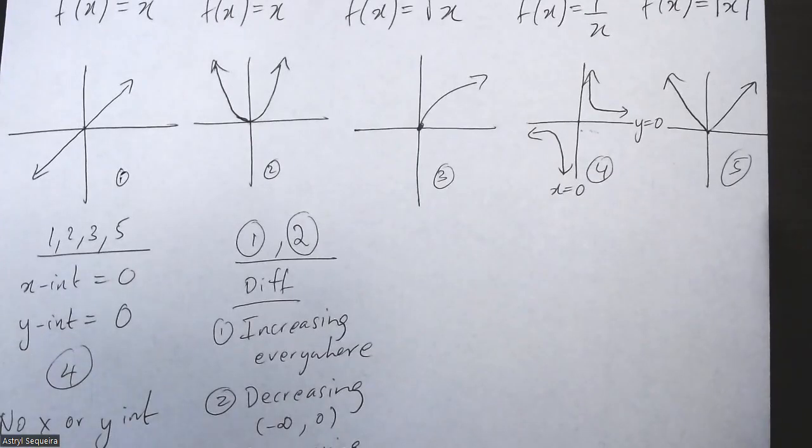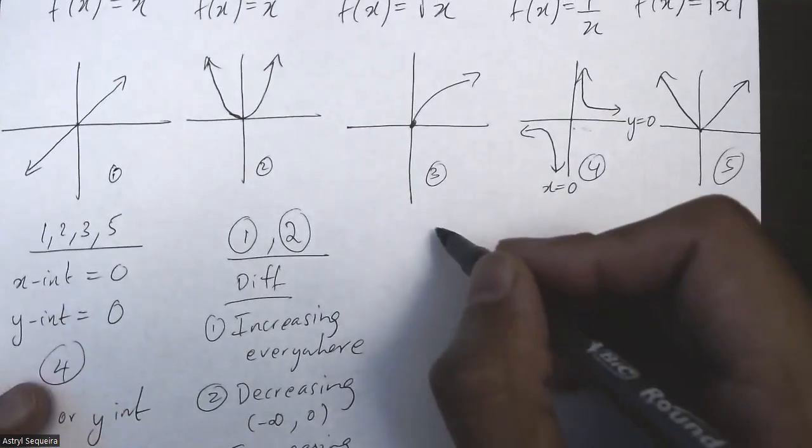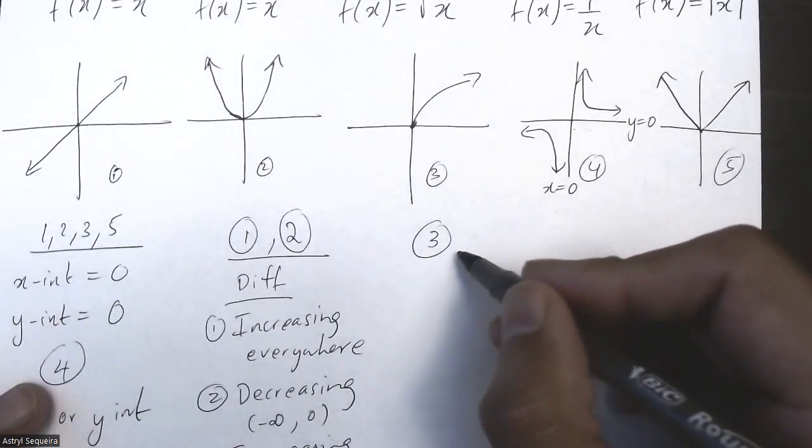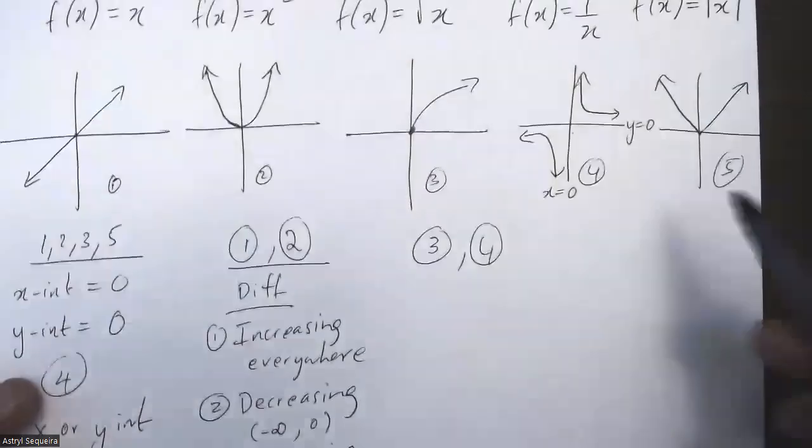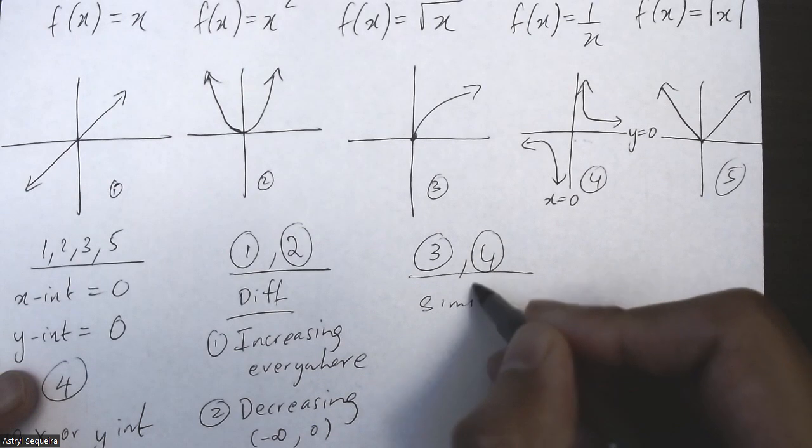It's pretty easy to find differences between all of these. Some of them may be slightly difficult to find the differences. Another similarity that I can mention, so let's say for example we're comparing three and four. Well, what's a similarity between three and four? It's a bit hard to tell.